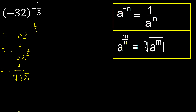5, exponent 1 — exponent is 1, therefore equal. 5 equal numbers that multiply is 32.